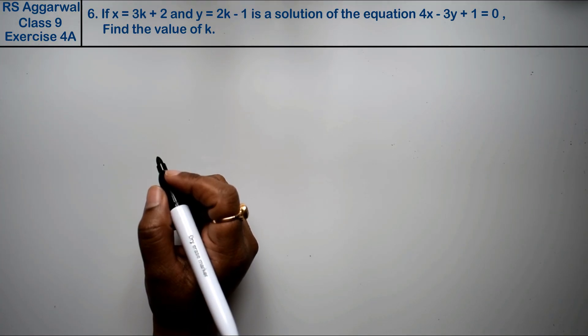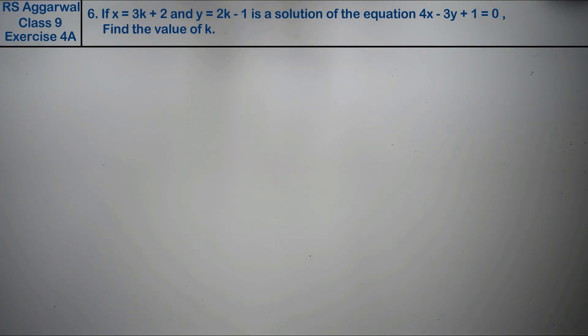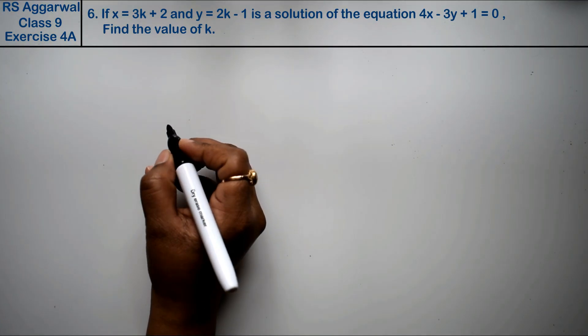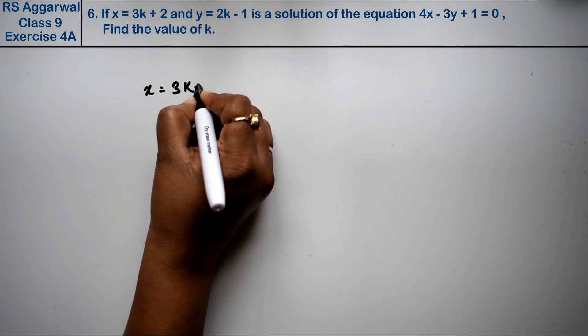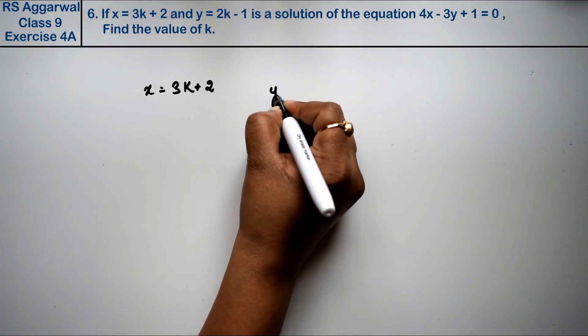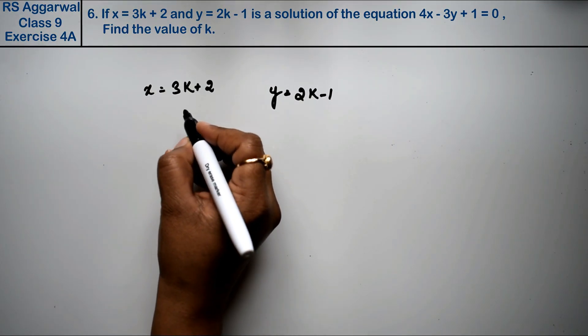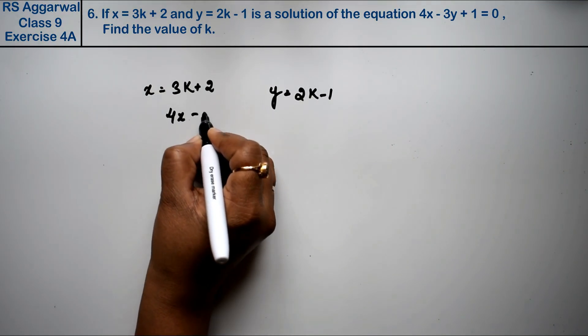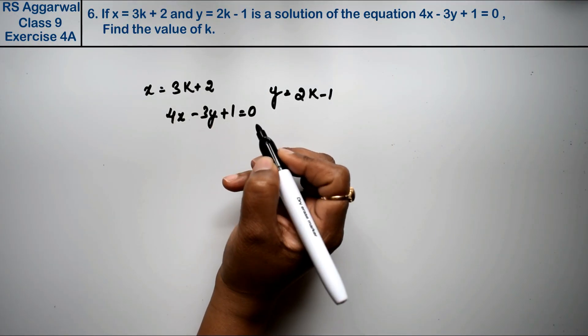Let's do question number 6 of exercise 4A, linear equations in 2 variables. Question number 6 is: if x equals 3k plus 2 and y equals 2k minus 1 is a solution of the equation 4x minus 3y plus 1 equals 0, find the value of k.